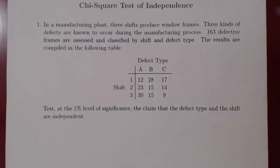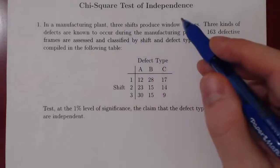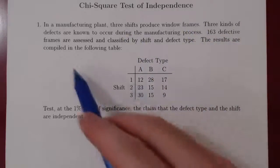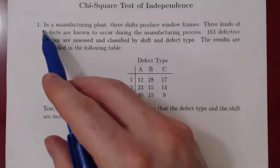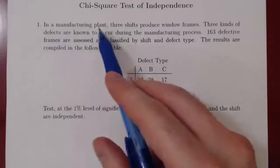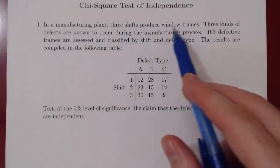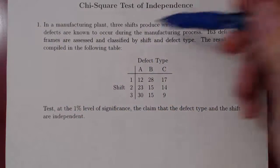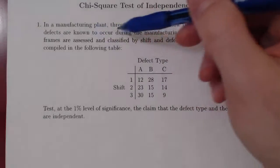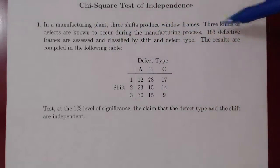In this video, we will consider an example of a chi-square test of independence. Here's the following problem: in a manufacturing plant, three shifts produce window frames, and three kinds of defects are known to occur during the manufacturing process.